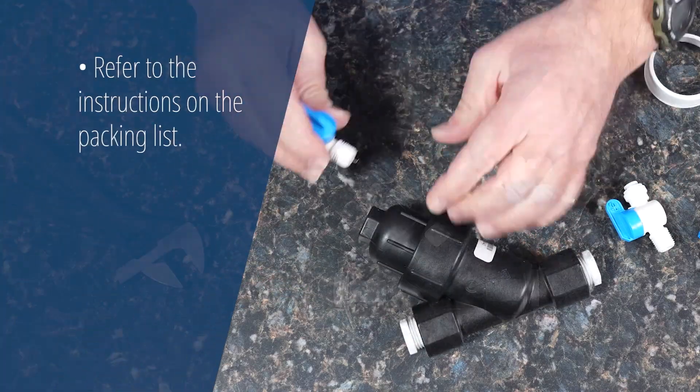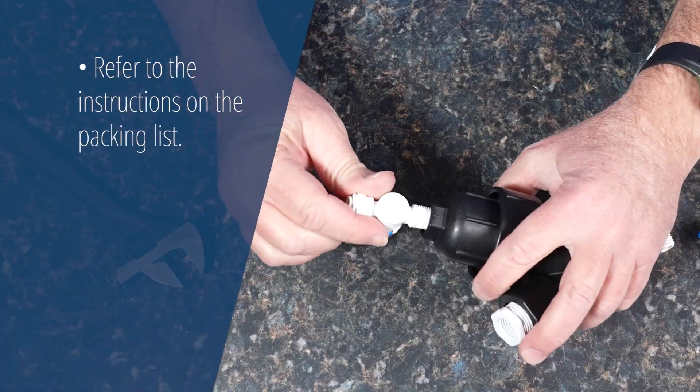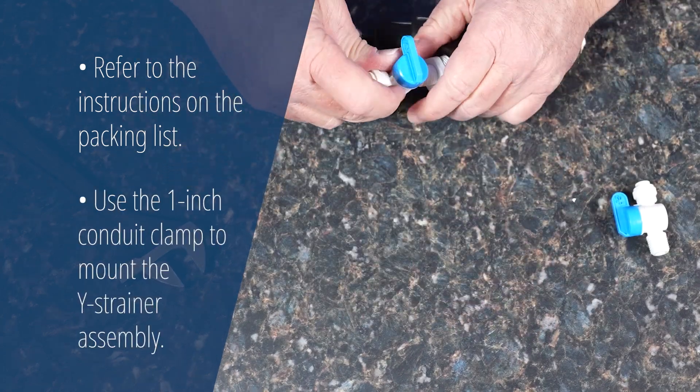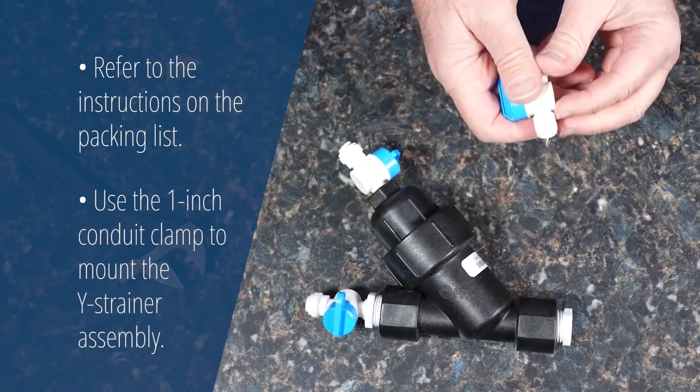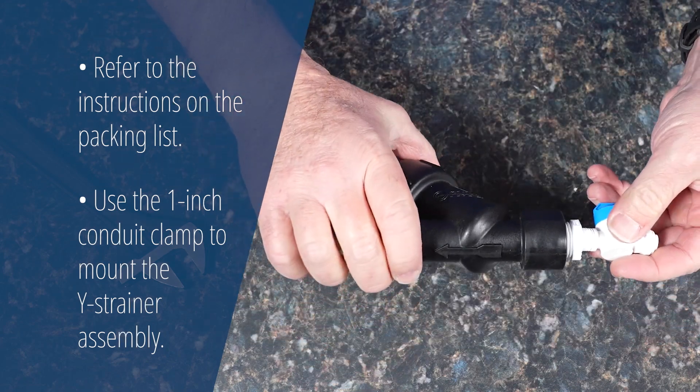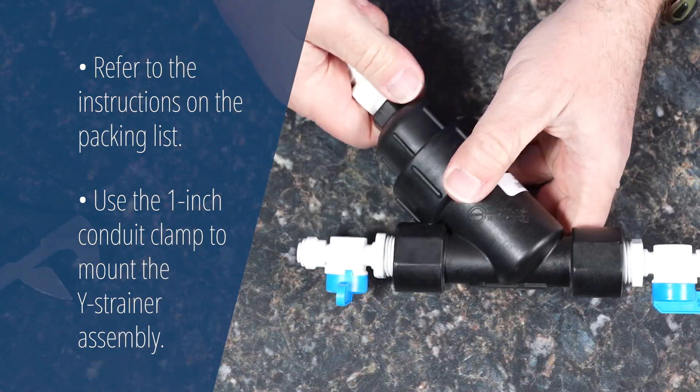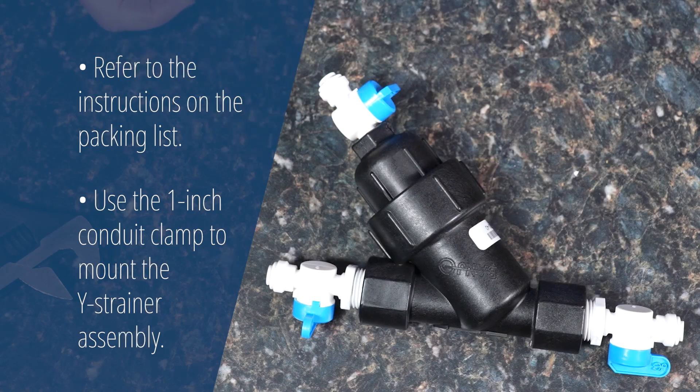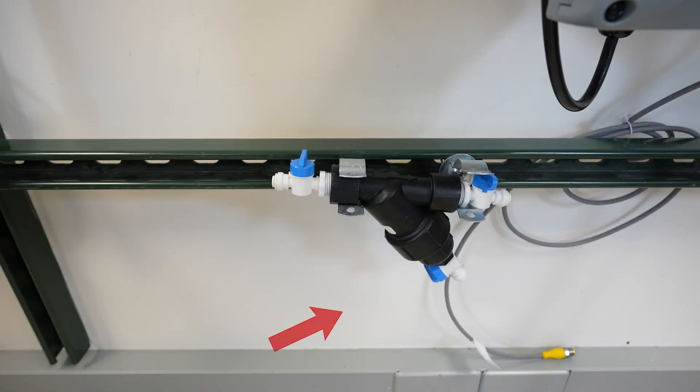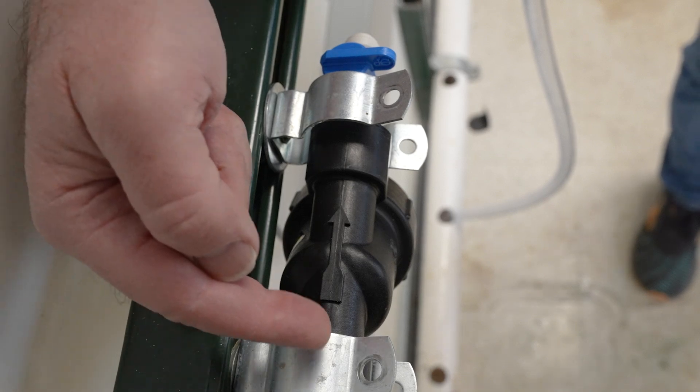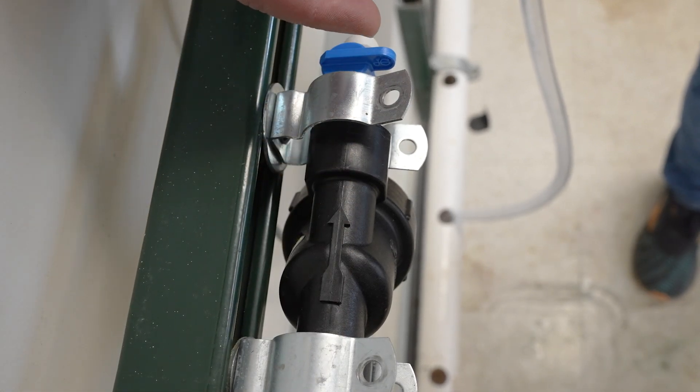Assemble the Y-strainer before you begin installation at your location. When you install the Y-strainer on the wall, make sure that the angled bypass port points down. Make sure that the flow arrow on the Y-strainer points toward the analyzer.